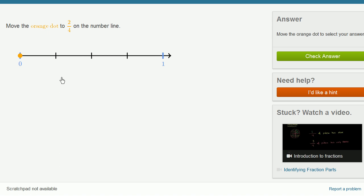Move the orange dot to 2 fourths on the number line. So we have 1, 2, 3, 4 equal sections. We need to move it to 1, 2 of them. If they didn't divide it into four equal sections for us, then it wouldn't have been so easy to just count 2.